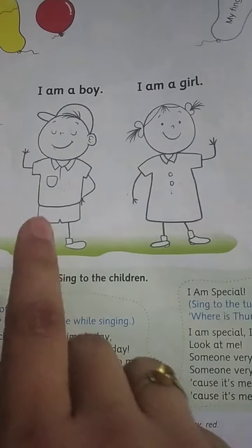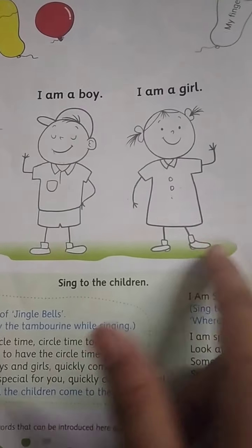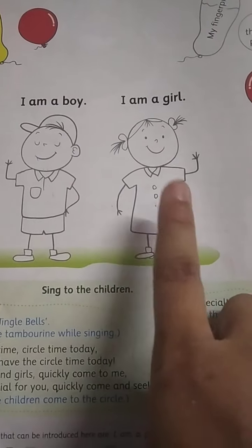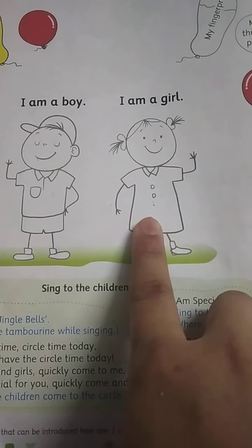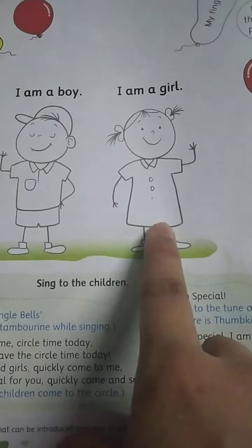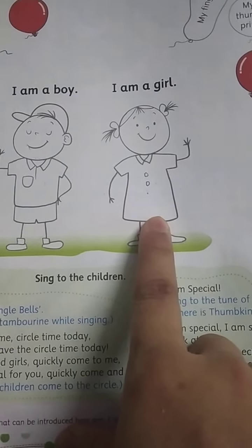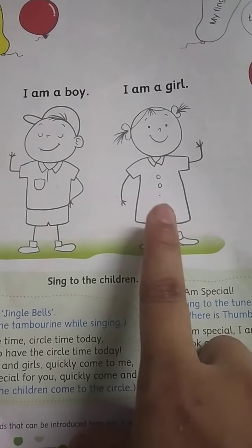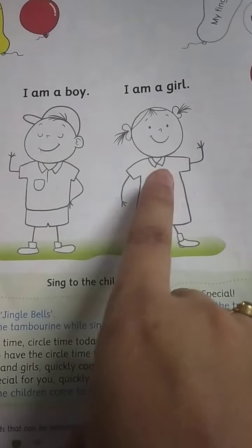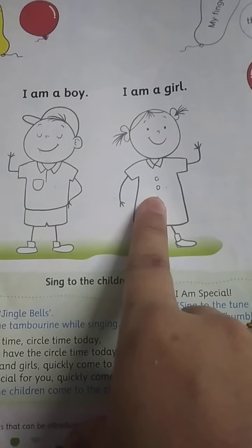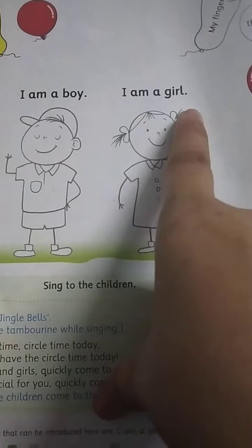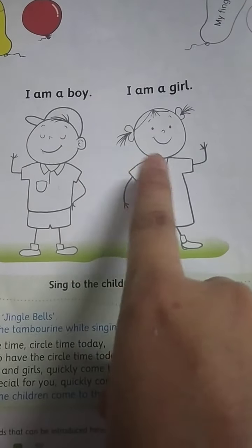Am I right? Aapko pata hai na — ki aap boy ho ya girl ho? Definitely aapko pata hi hoga. As your teacher is a girl, I am a girl, so I will color this picture. So just see — if you are a boy, then you will color this one, and if you are a girl, then you will color this one. This time I am not going to tell you which color to use — you can color it as per your choice, because this is your dress. But just keep one thing in mind: the face will be colored with skin color and hair will be black. Rest is as per your choice.